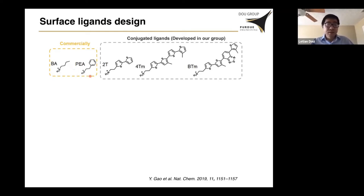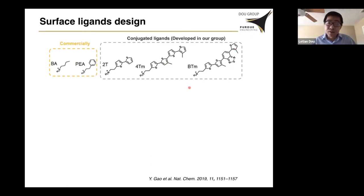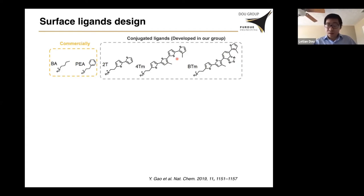To address this issue, we designed a series of new semiconducting organic ligands based on oligothiophene units. We show that we have two-thiophene (2T), four-thiophene (4T), and even molecules containing a benzodithiophene unit. Now they are even bigger and bulkier, and may better protect the perovskite. They also have their own optical and charge transport properties, so they can add new functionality to the perovskite.